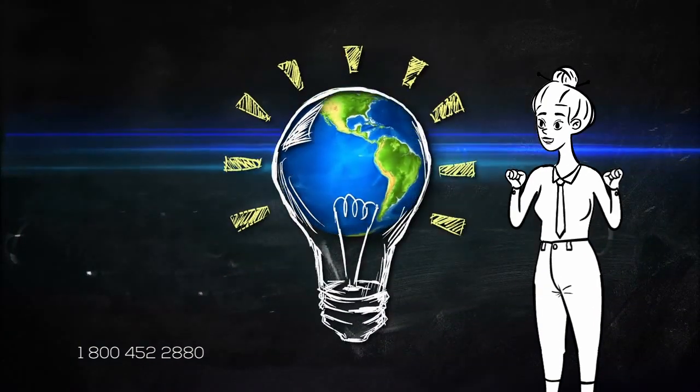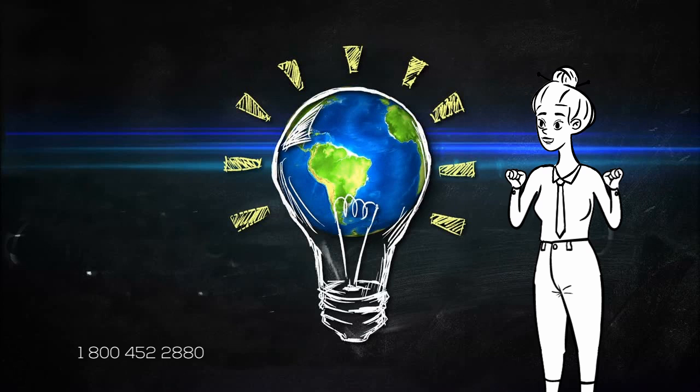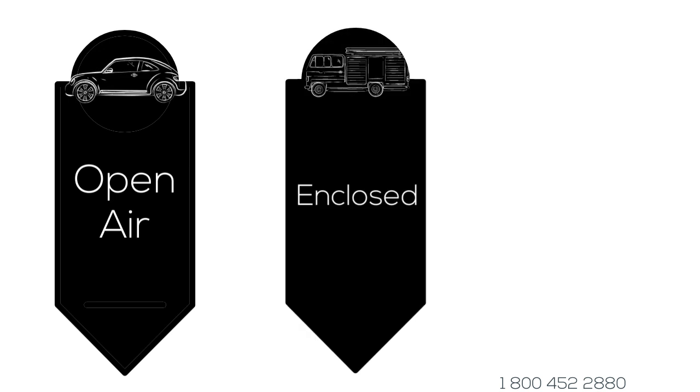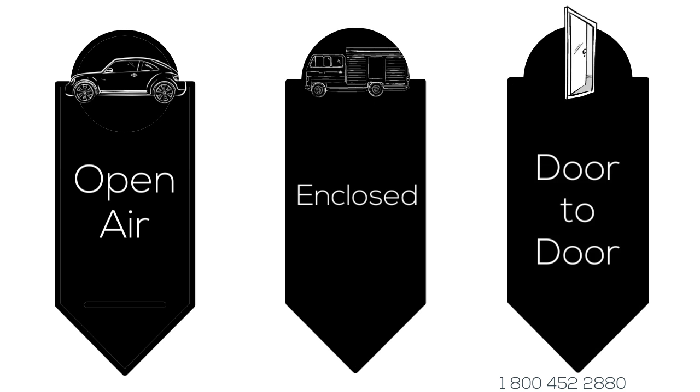We offer different types of shipping services that will fit any budget. Open air is the fastest and cheapest way to transport your vehicle. Enclosed takes a little more time to deliver but offers protection from all the elements. Door-to-door delivers your vehicle right to your doorstep.